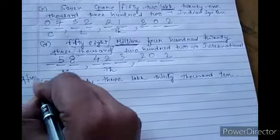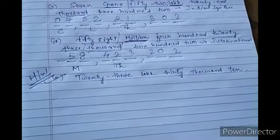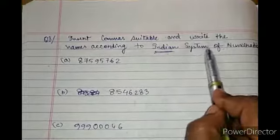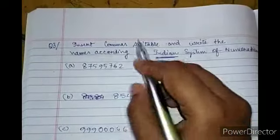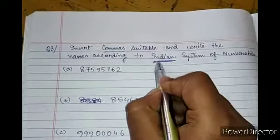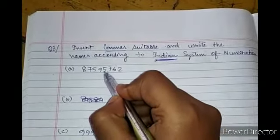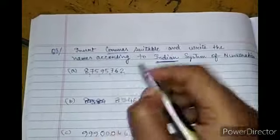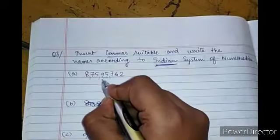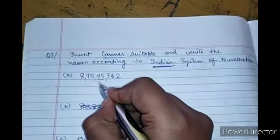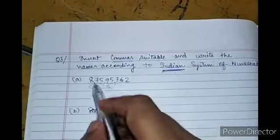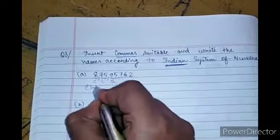Now we have to insert commas suitably and write the names according to the Indian system of numeration. In the Indian system, we place commas after every: ones, tens, hundreds — comma — thousands, ten thousands — comma — lakhs, ten lakhs — comma. So: H for hundreds, Th for thousands, L for lakh, C for crore.